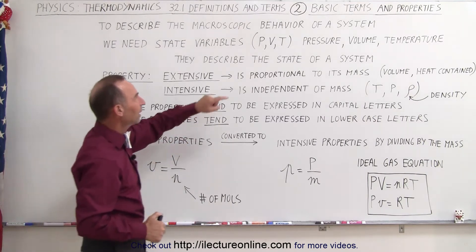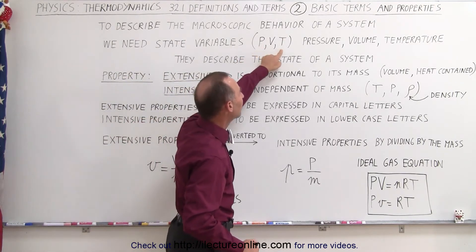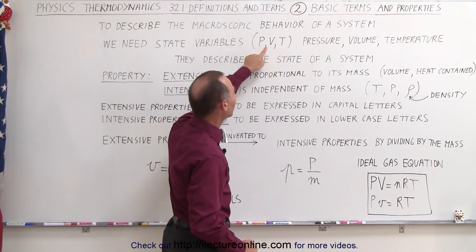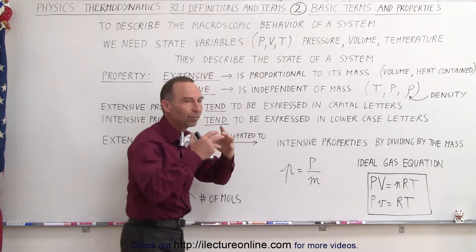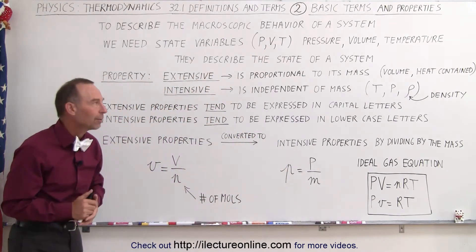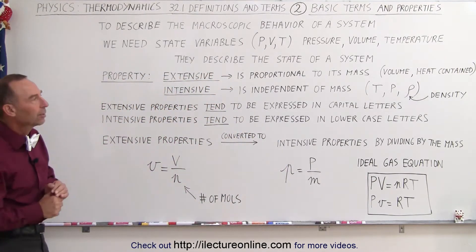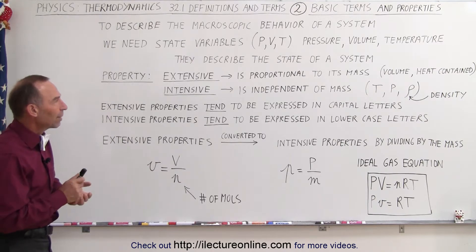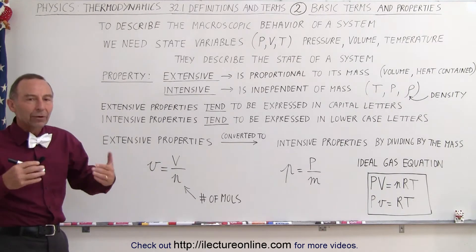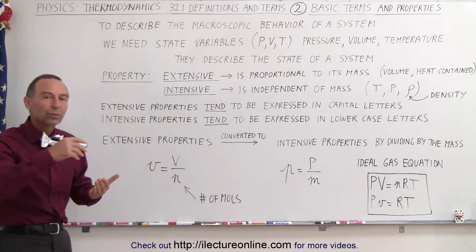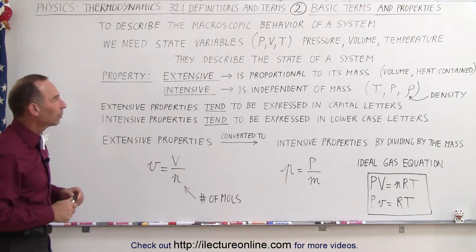The state variables we're dealing with are P, V, and T, which stand for the pressure, volume, and temperature of the substance within a container. Typically we'll be talking about gases. They describe what state it's in, and later we'll see that we can go from one state to another state when these variables change.